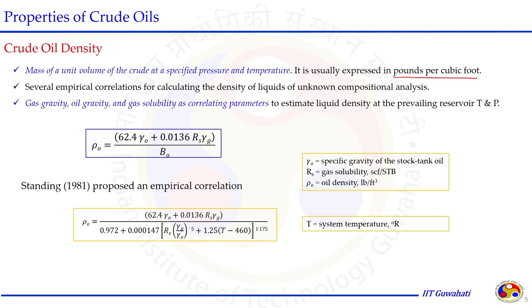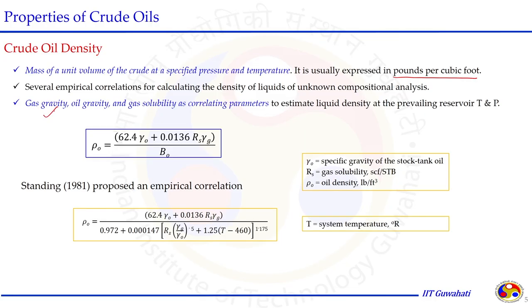At a particular temperature and pressure, crude oil has a certain solubility for natural gas. The natural gas dissolved in the oil at reservoir conditions affects the density calculation. The expression for crude oil density involves oil quality (gamma_o), gas quality (gamma_g), and gas solubility (Rs), divided by the oil formation volume factor that relates reservoir conditions to surface conditions.